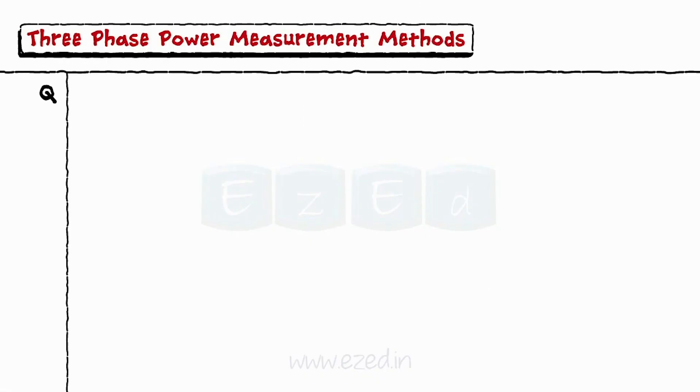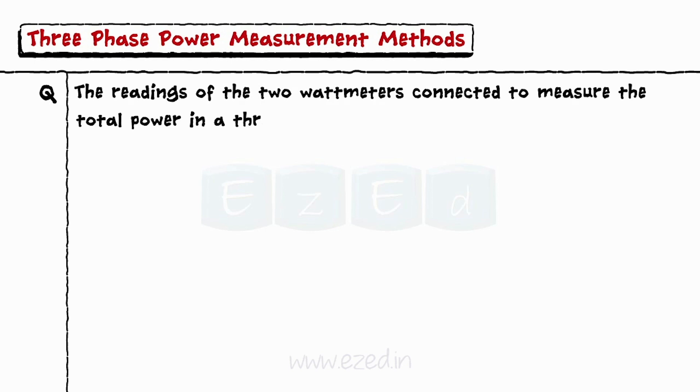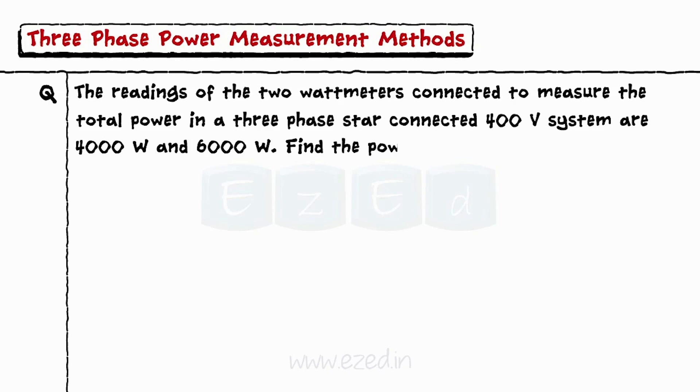Let's take an example. The readings of the two wattmeters connected to measure the total power in a three-phase star connected 400 volt system are 4000 watts and 6000 watts. Find the power factor, the total power, and the line current.